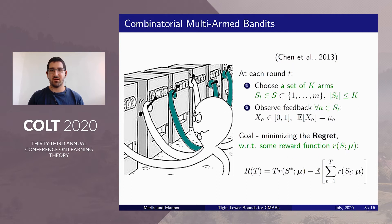In the combinatorial case, or the CMAB case, instead of selecting a single arm on each round, the agent selects a set of up to K arms, and then observes feedback for each of the arms he chose, which is also called the semi-bandit feedback. The goal is still minimizing its regret, but in this case the regret is with respect to some known, but possibly non-linear reward function.